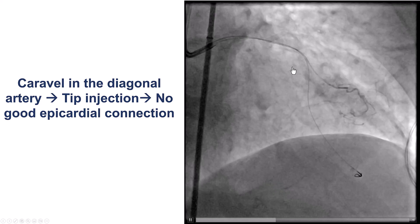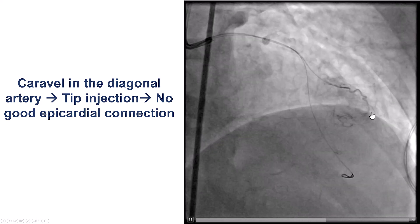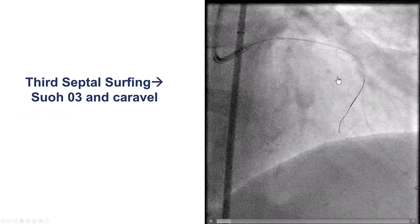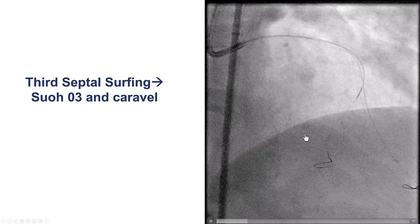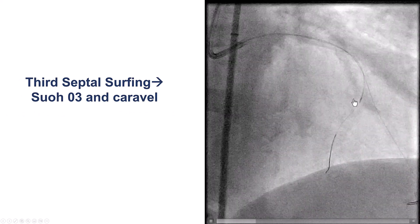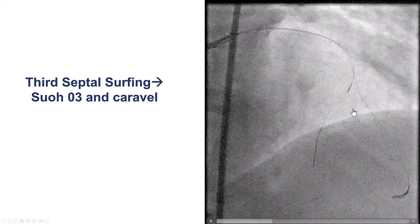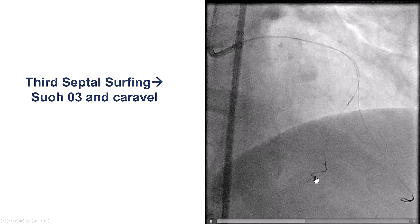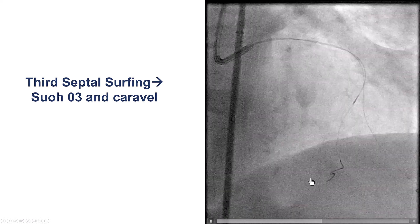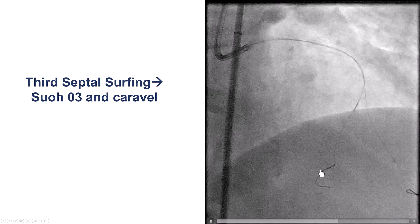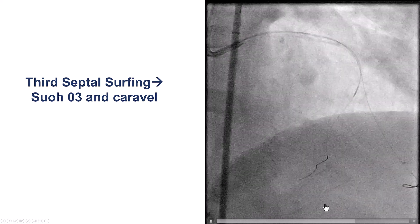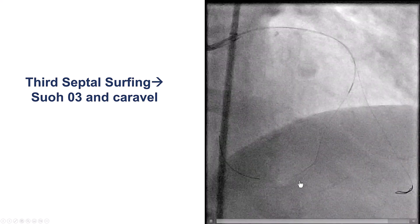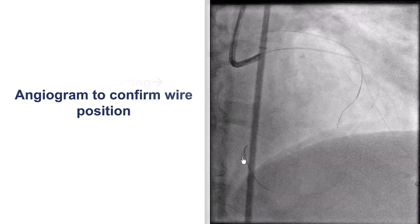We advanced the Keravel microcatheter and tried to understand the connections. The epicardial connections were not very good, so we did surfing of the third septal using a Keravel microcatheter and a SUO3 guide wire. Those septals were fairly tortuous, so we were moving back and forth, withdrawing the guide wire and advancing with constant rotation. Eventually there was some release, and the wire seemed to be going in the right direction.